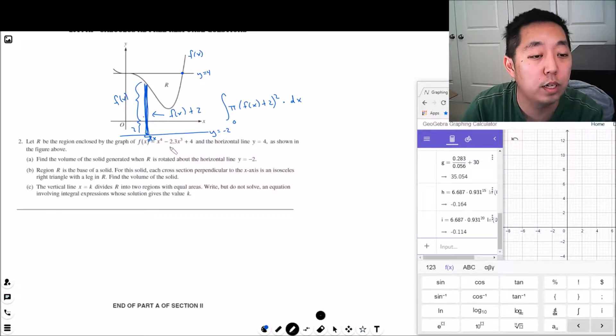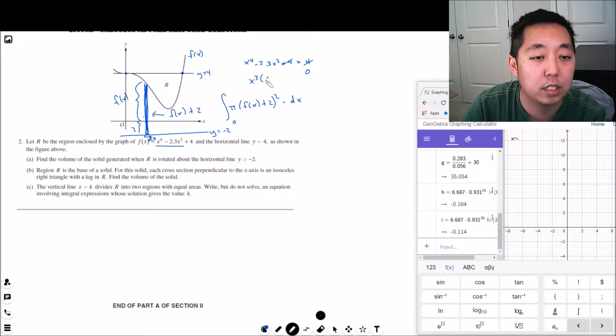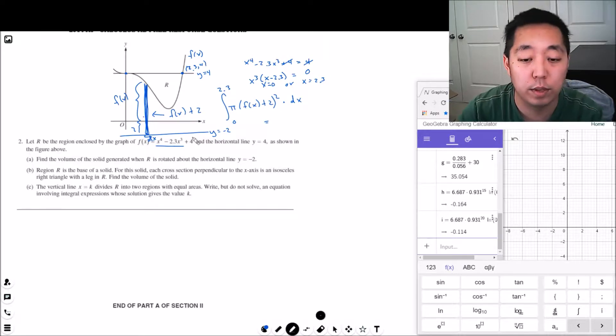I want to know when this is equal to 4. So, x to the 4th minus 2.3x cubed plus 4. I want to know when that equals 4. Right? Y equals 4. I technically want to know this intersection point. I subtract 4, I can make that 0. I can factor out x cubed, x minus 2.3 equals 0. So, I find here x equals 0 or x equals 2.3. So this point over here must be 2.3, 4. So I'm going all from 0 to 2.3, okay? And f of x is given by this equation here.